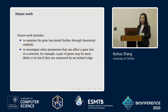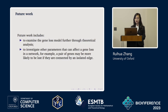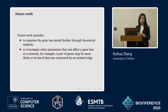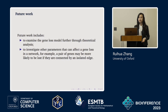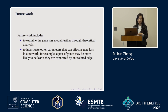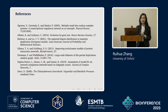Future work includes examining the gene loss model through theoretical analysis and investigating other parameters that can affect gene loss in a network. For example, a pair of genes that are isolated in a duplication network could be lost with a certain probability, potentially making the network more realistic. Beyond gene loss, other biological mechanisms not yet incorporated into this model can also be further investigated.